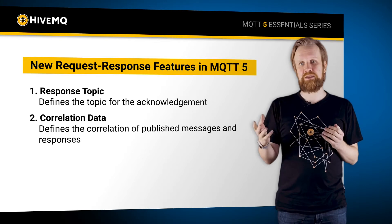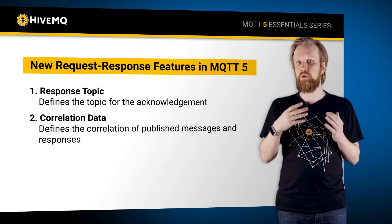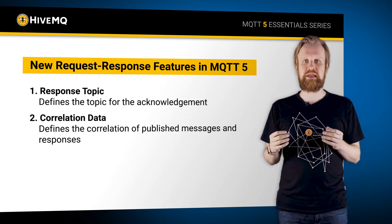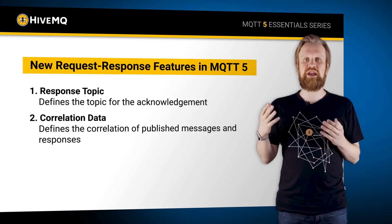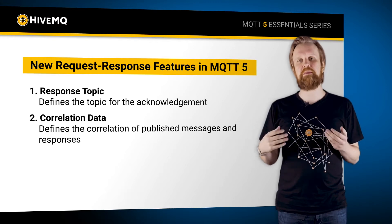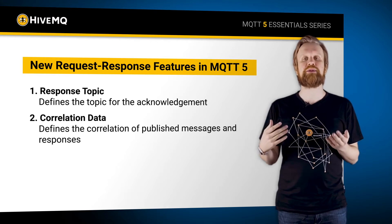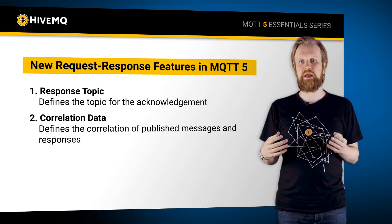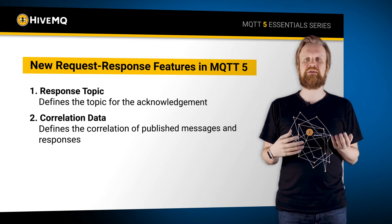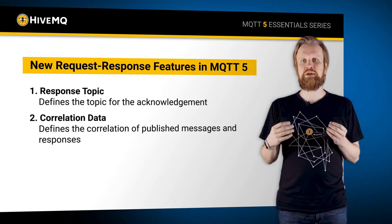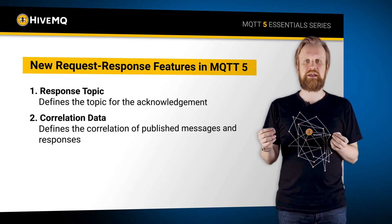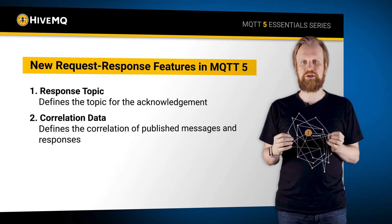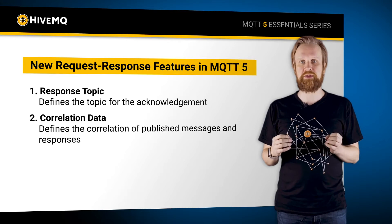This is necessary because, like everything in MQTT, we have an end-to-end relationship here and there can be multiple subscribers for a single topic. So the sender of the message uses the correlation data to know which publish was referenced.